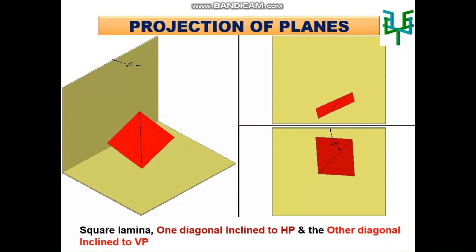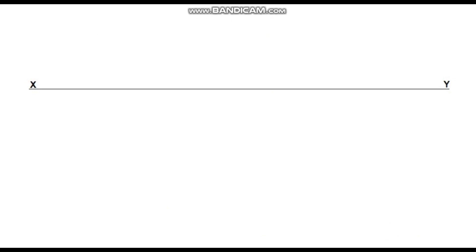The projection of this case can be drawn in three stages. First, draw an XY line. In the first stage, the square is parallel to HP. So the square should be drawn in the plan with its diagonal perpendicular to VP.